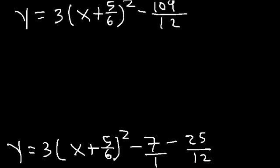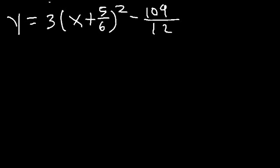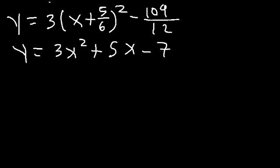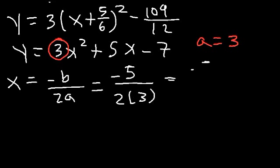Now let's see if we can get the same answer using the other technique. The original equation was 3x squared plus 5x minus 7. You can see that a is equal to 3. So x is negative b divided by 2a, which is negative 5 divided by 2 times 3, which is negative 5 over 6. That's the x-coordinate of the vertex.